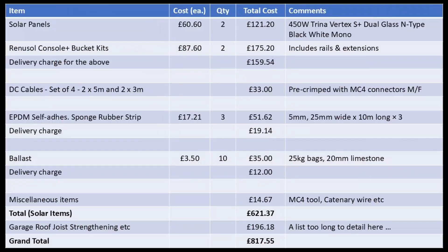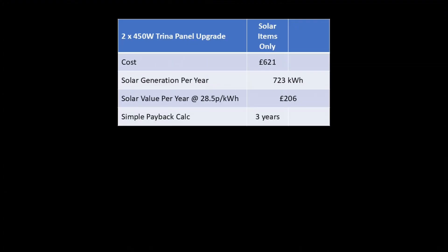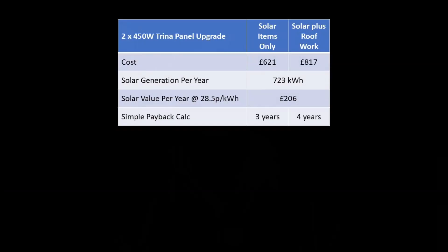So back to that thumbnail. At an average unit cost of 28.5 pence including VAT, an additional 723 kWh equates to a value of around £206 per annum. With an implementation cost of £621, that represents a payback of about three years. Or if I also include the costs for strengthening the garage roof — which to be fair I probably should — a cost of £817 and a payback of just under four years.